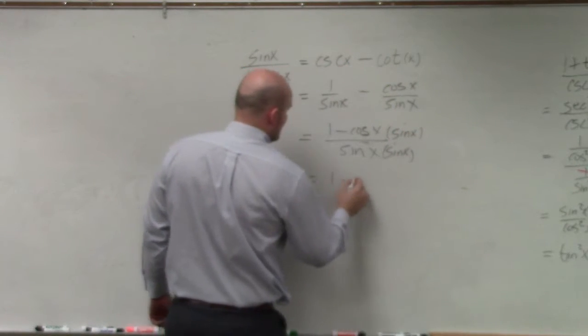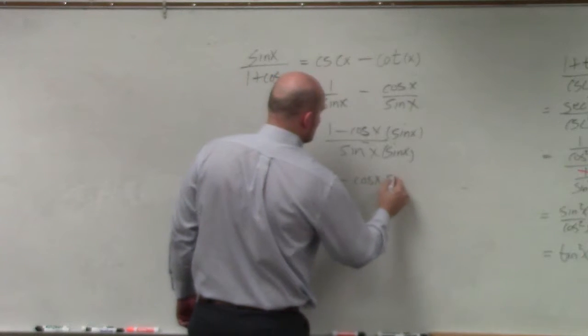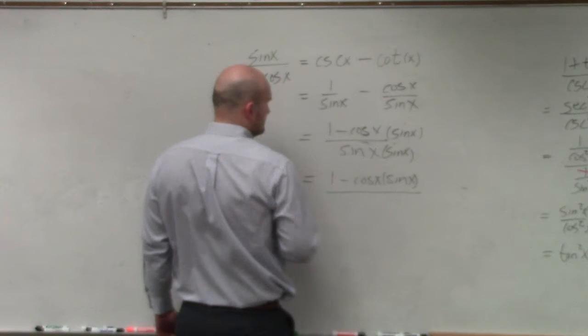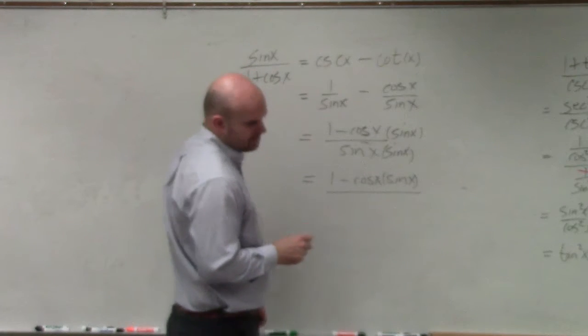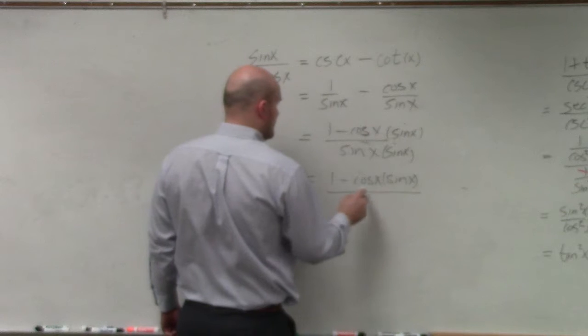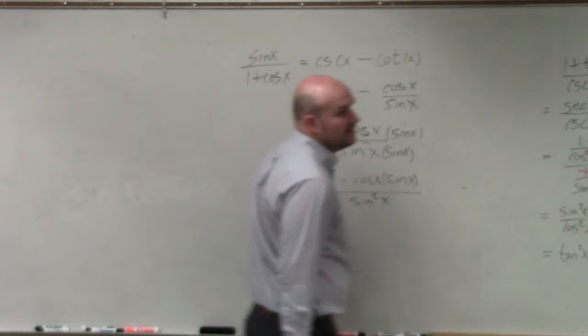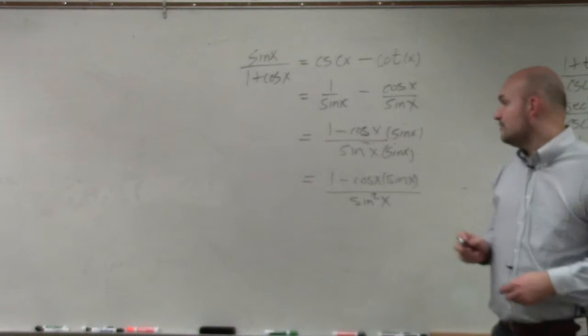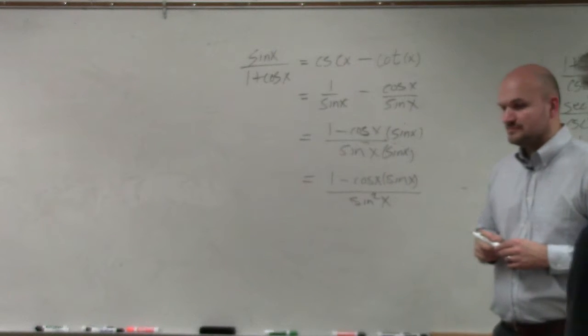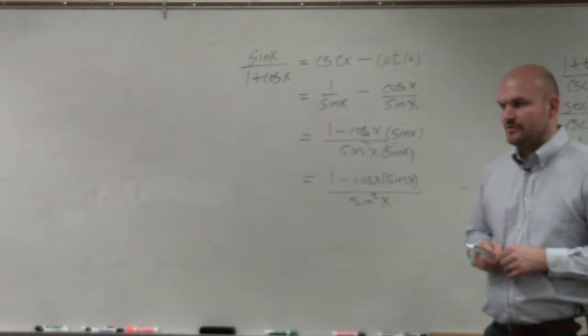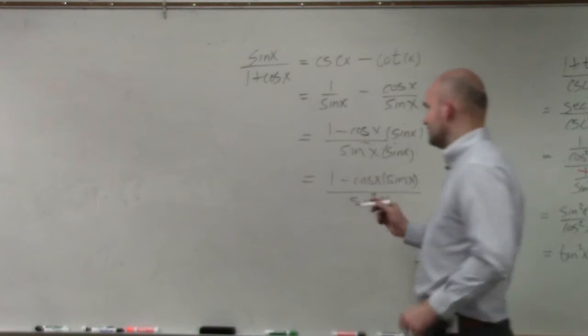If I do that, I get 1 minus cosine of x, sine of x, all over 1 over sine squared of x. Then, based on my Pythagorean Theorem, what is sine of x equal to? What's 1 minus cosine squared of x? 1 minus cosine squared of x. Sine squared is the same.